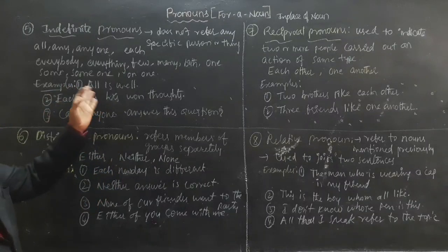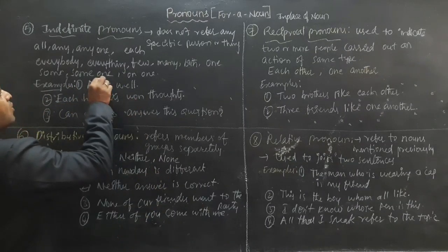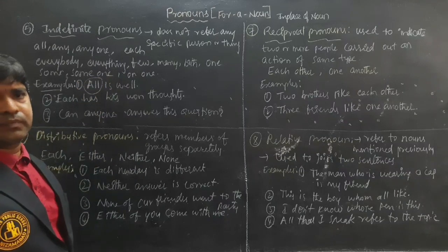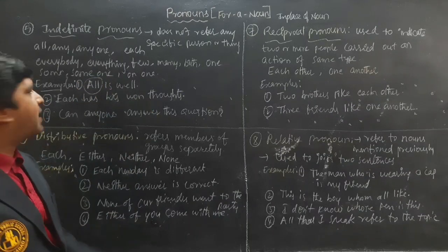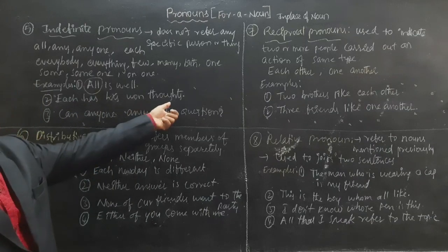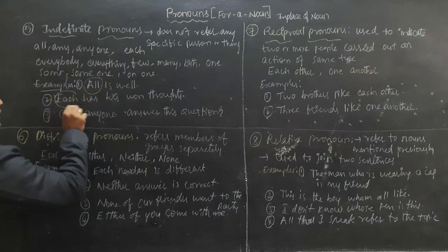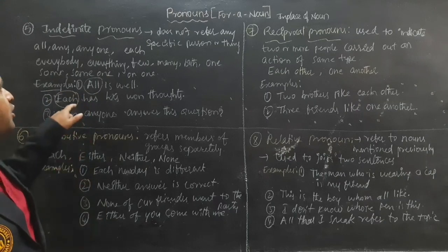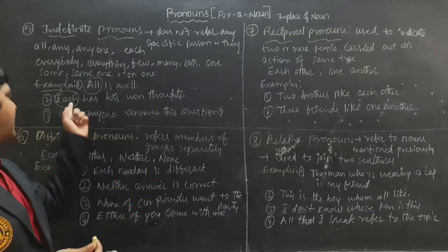For example: 'All is well' — here we don't know exactly what 'all' is; everything is well. 'Each has his own thoughts' — this 'each' is not used in a specific way, it is used in a general way.